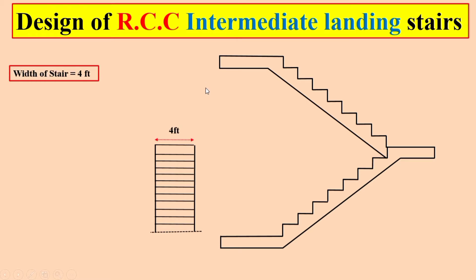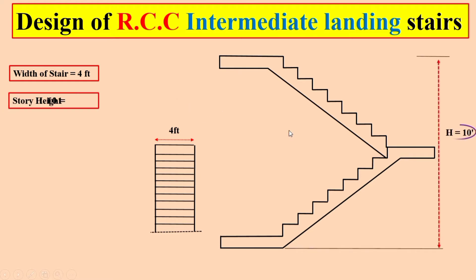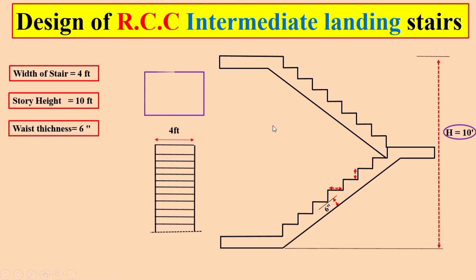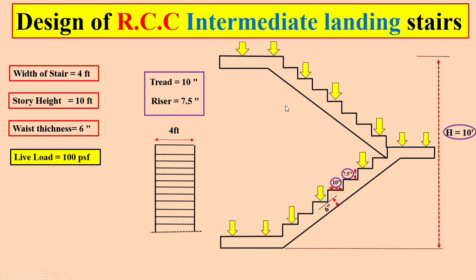Now dear students, the given data is: width of the stair is 4 feet, riser size is 7.5 inches, total story height for the staircase is 10 feet, slab thickness is 6 inches, tread size is 10 inches, and riser size is 7.5 inches.